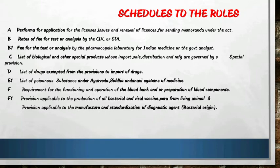Schedule C to the rules is the list of biological and other special products whose import, sale, distribution and manufacture are governed by special provision. Schedule C1 to the rules is the list of other special products whose import, sale, distribution and manufacture are also governed by special provision. Both C and C1 deal with lists of biological and other special products.